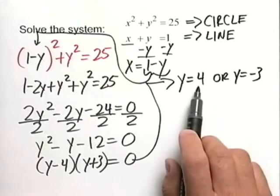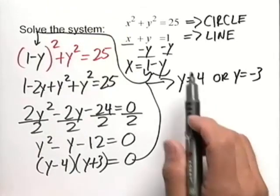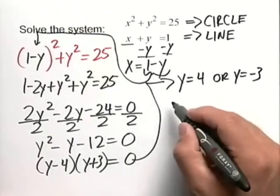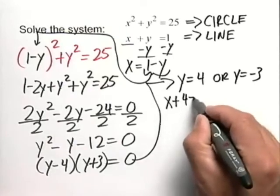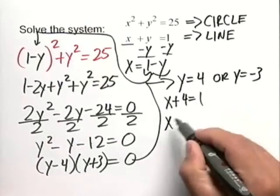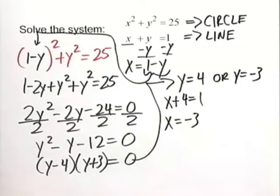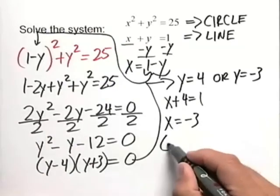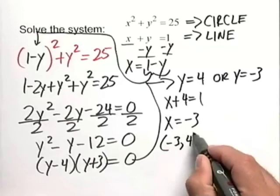We have to find the x-coordinate that's associated with that, and I would plug this into our linear equation. So from this, we get x plus 4 equals 1 and obtain x equals negative 3. Good idea to write this as an ordered pair, negative 3 comma 4.